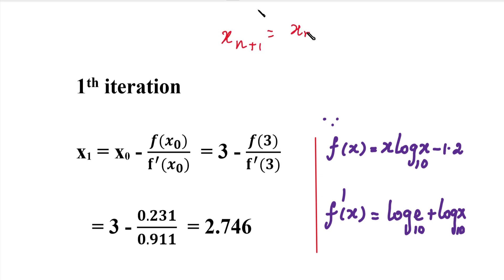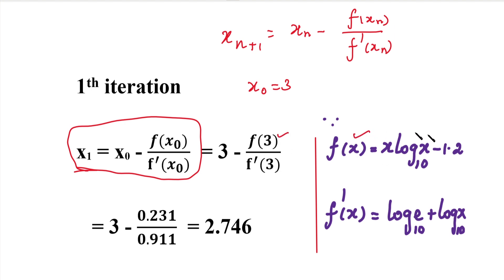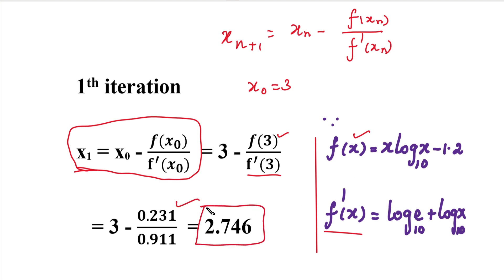Newton's Raphson formula: xn+1 = xn - f(xn)/f'(xn). We substitute n=0: x1 = x0 - f(x0)/f'(x0). We have fixed x0 = 3. f(x0) = f(3) in the numerator, and f'(x0) = f'(3) in the denominator. Simplifying, the final answer for x1 is 2.746.